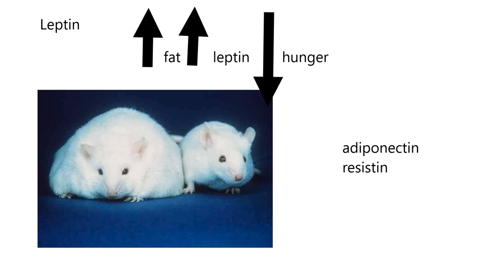Here are two other hormones made by fat tissue, supposedly - adiponectin and resistin. This whole area is new. Leptin is the most famous and was discovered around 1995. It can also be made by other tissues - in dogs, it's made by reproductive tissue, so it might have a reproductive function. These other two fat hormones were discovered later and are relatively new, with a lot of research still ongoing.